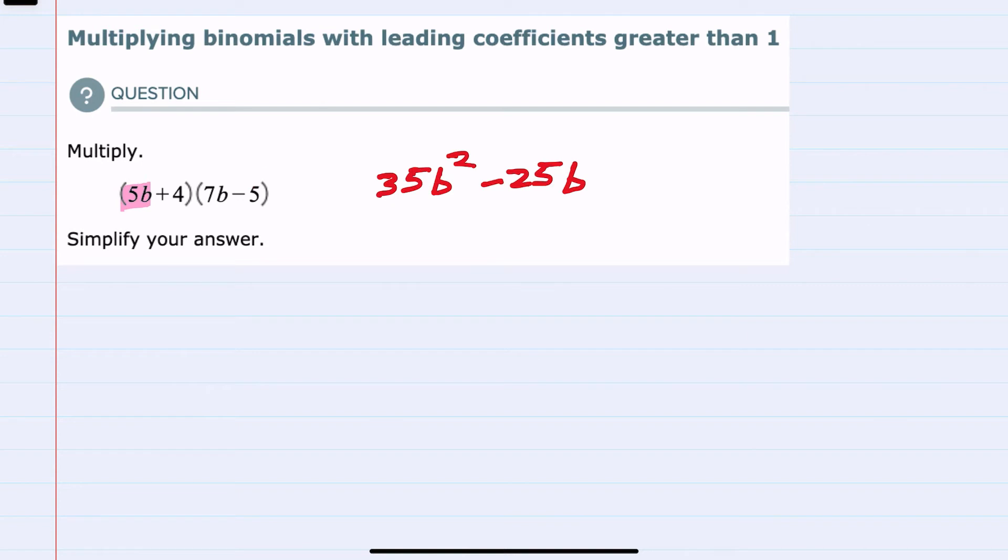Having multiplied by the 5b, I'm now going to switch and multiply both terms in the second expression by 4. Starting with 4 times 7b, multiplying the 4 and 7 would be a positive 28. And again, the only b here is the 7b, so just 1b.